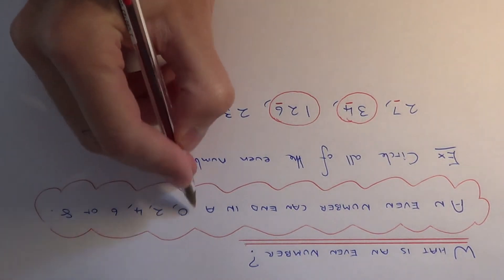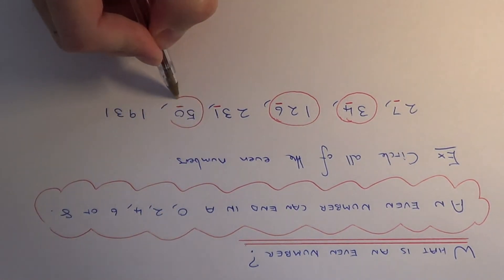Our next number is 50. Now 50 ends in a 0, so this one will be an even number.